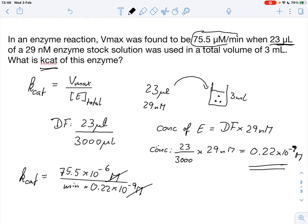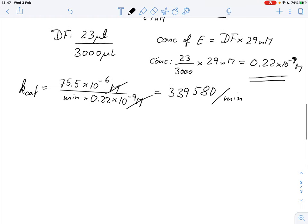And if we do this calculation, if we put that into a calculator, we get roughly 339,580 or so per minute. So this is how much one enzyme molecule, how much substrate molecules this enzyme will turn over per minute.